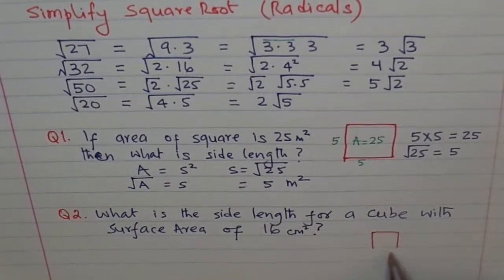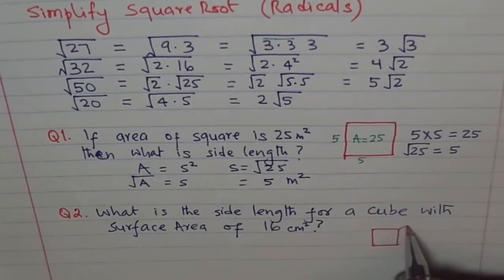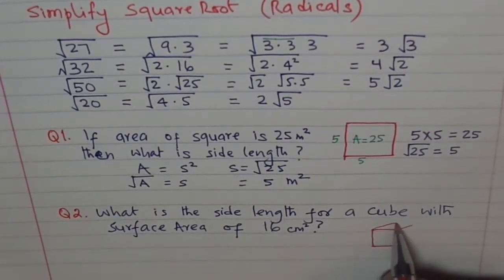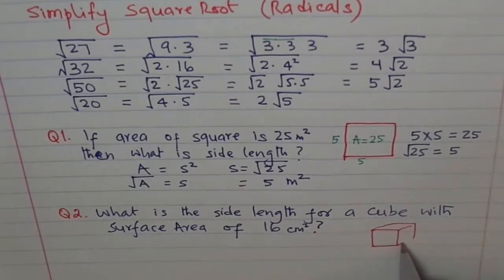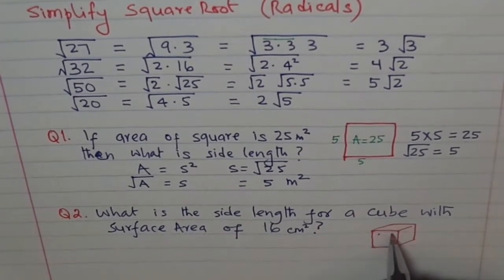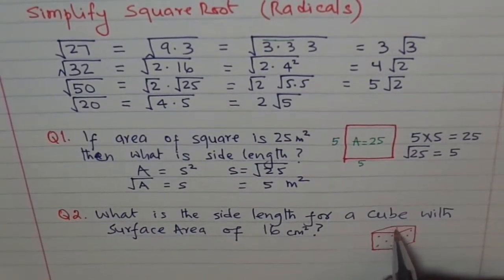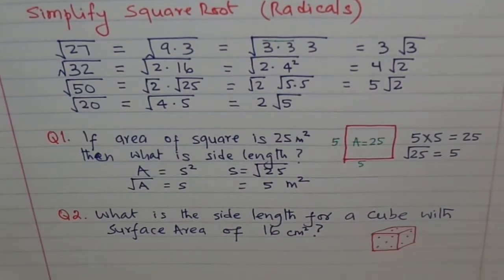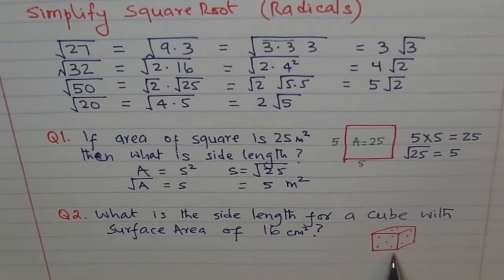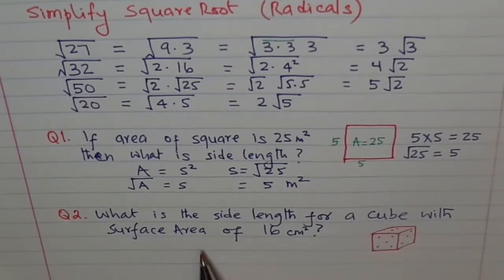Make a 3D figure in your mind so you understand what we are really talking about. Think of a cube — like a dice. Your problem is: what is the side length, where each side length is equal. You have to find the side length for this cube whose surface area is given as 16 centimeter squared. Try to do that.